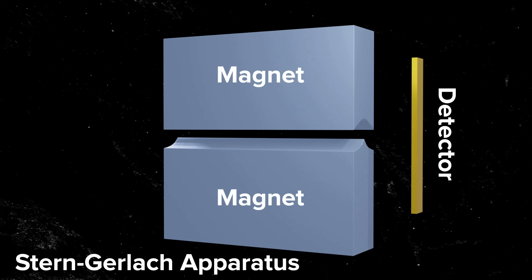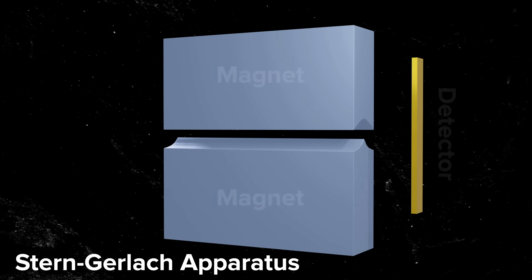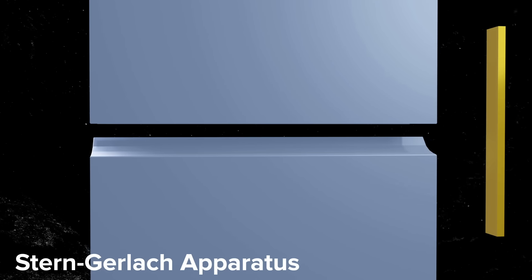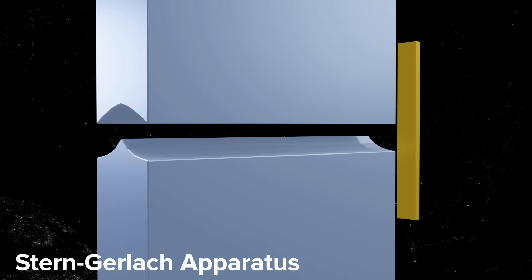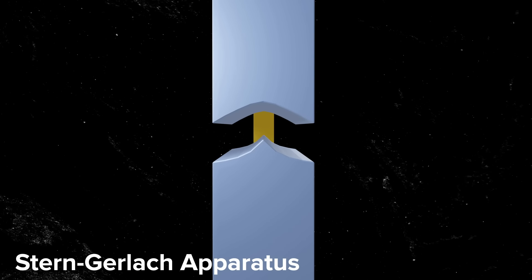We're going to use Mermin's experiment, but we need to back up a little further and talk about quantum mechanics and how you measure things in it. There was a famous experiment from the 1920s by Stern and Gerlach, in which they looked at the properties of particles when you pass them through magnets. Essentially you have a bunch of particles passing between a pair of magnets — a very non-uniform magnetic field.